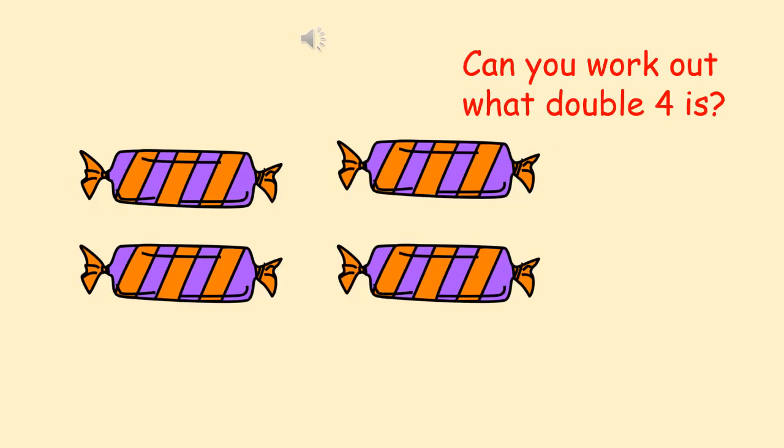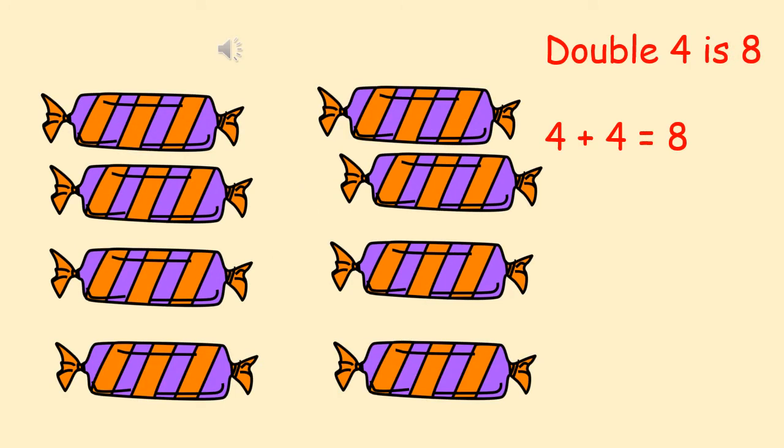I've got four sweeties now. What do I need to do to double four? What will the answer be? So I had four, and to double four, I need to add another four. Double four is eight. Four plus four equals eight. Did you get that right?